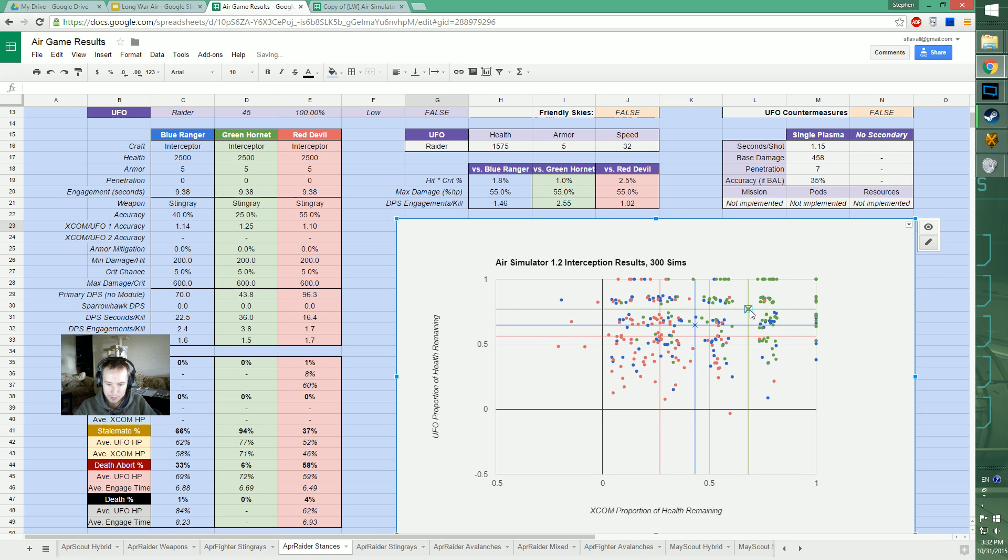On balanced we're getting closer - probably about 50% kill rate sending three interceptors because we're dealing about a third of the UFO's health. But aggressive is definitely where we get the most damage. Early in the game, UFOs typically aren't dealing enough damage and aggressive is going to be the correct stance.